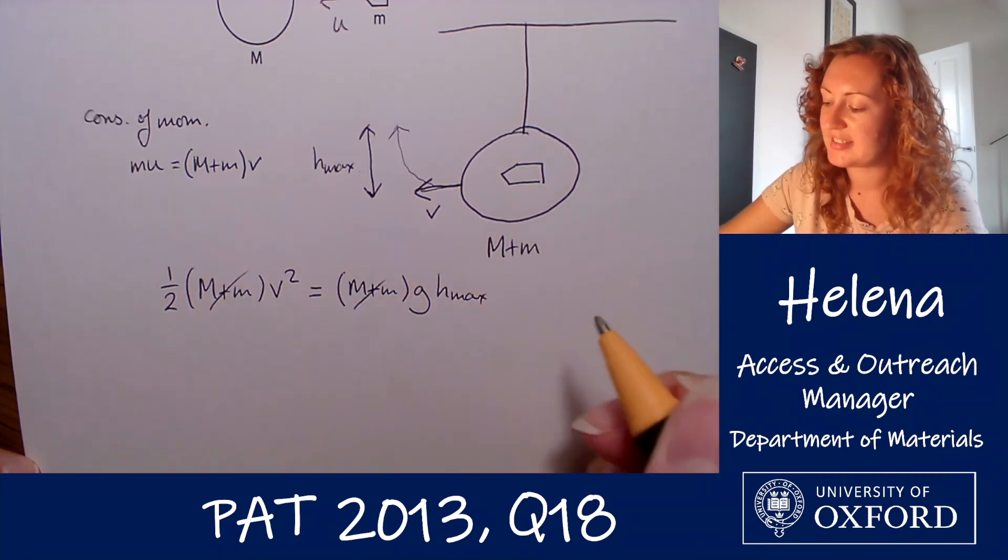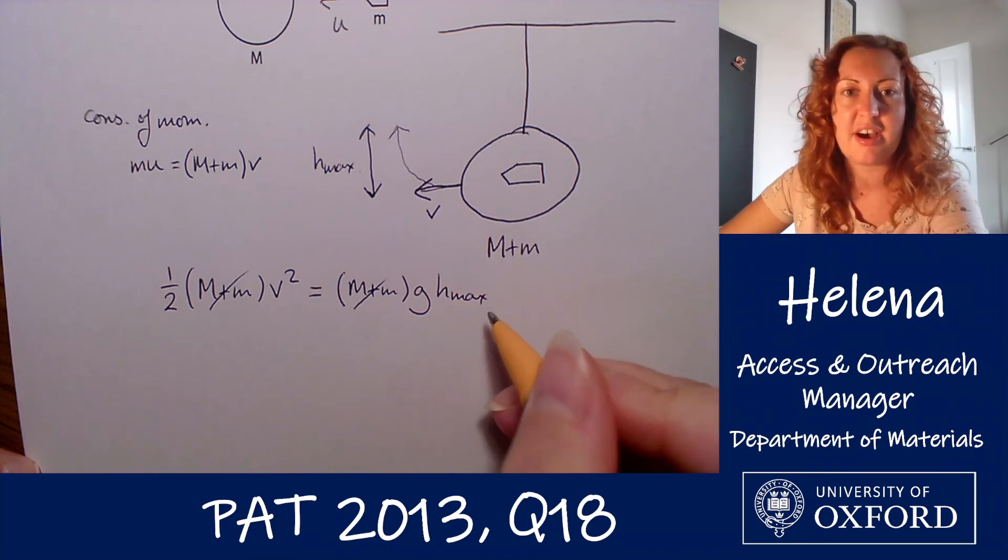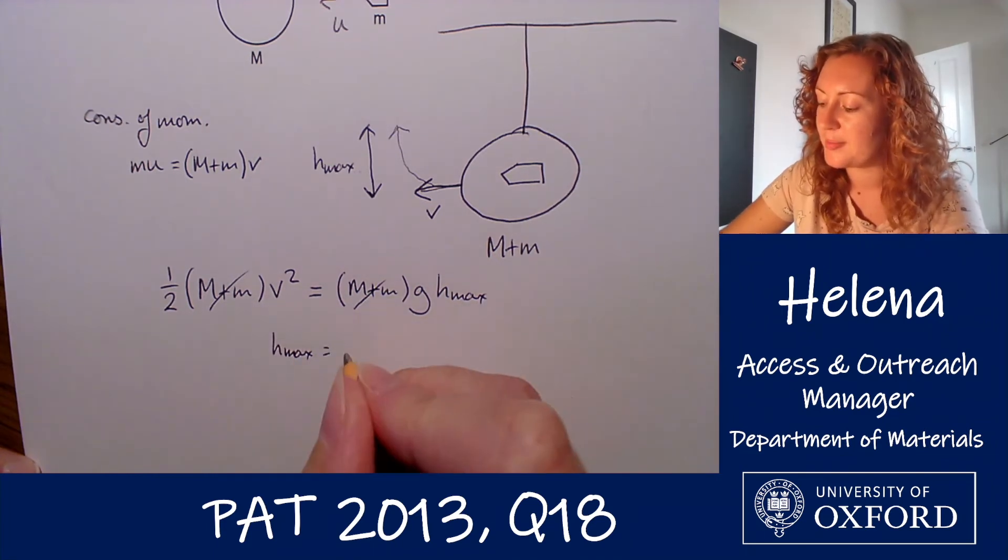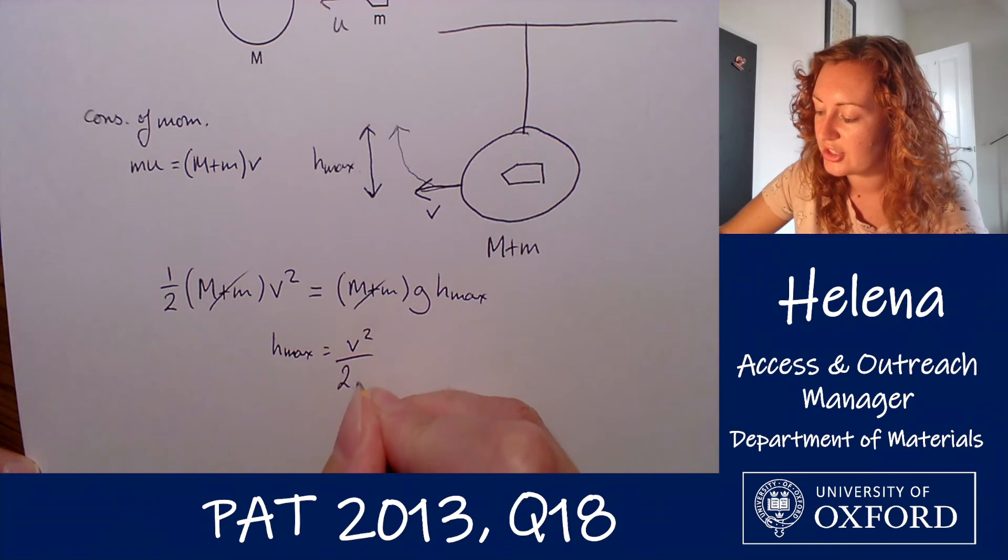Now we can cancel through the masses, and we want to rearrange to find h_max. So if we do that we find that h_max equals v squared over 2g.